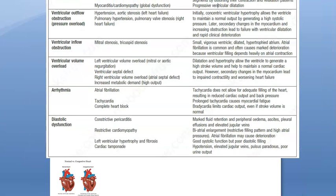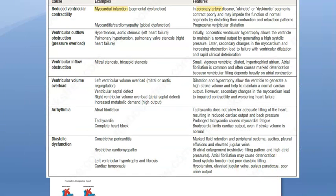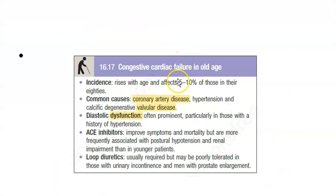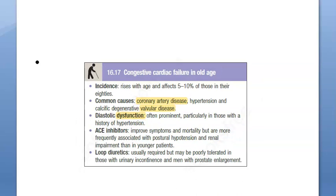If the heart is not meeting demand, we need to identify whether the problem is the heart muscle, around the heart, the valves, or arrhythmia. In elderly people, the common causes are coronary artery disease, valvular disease, and diastolic dysfunction — from conditions like constriction, restriction, or tamponade.